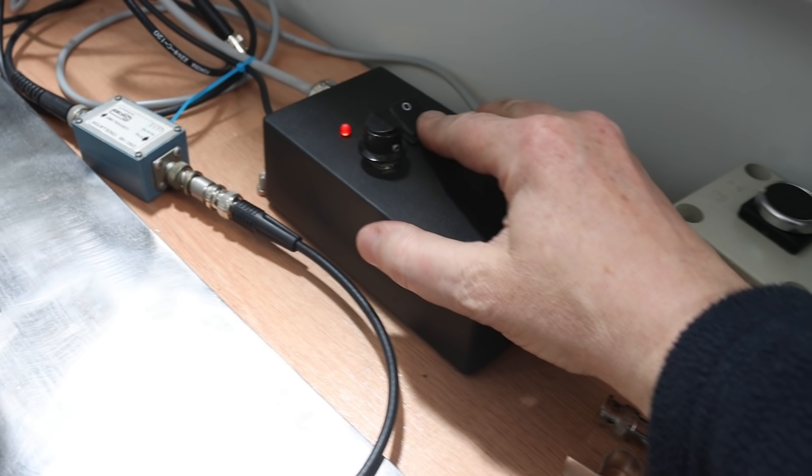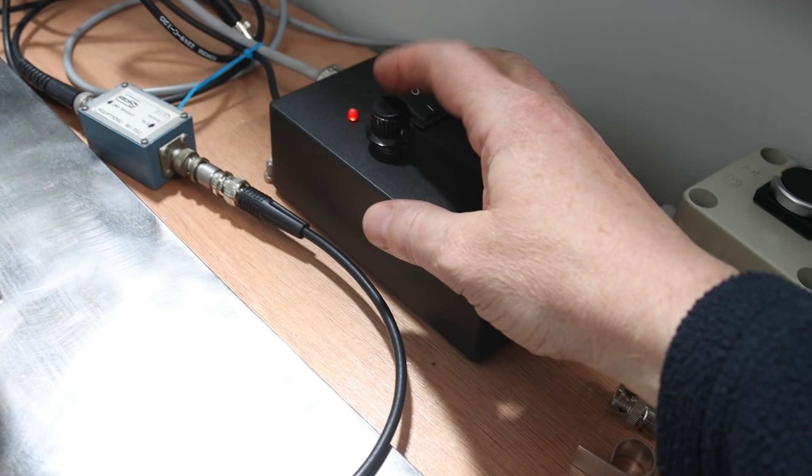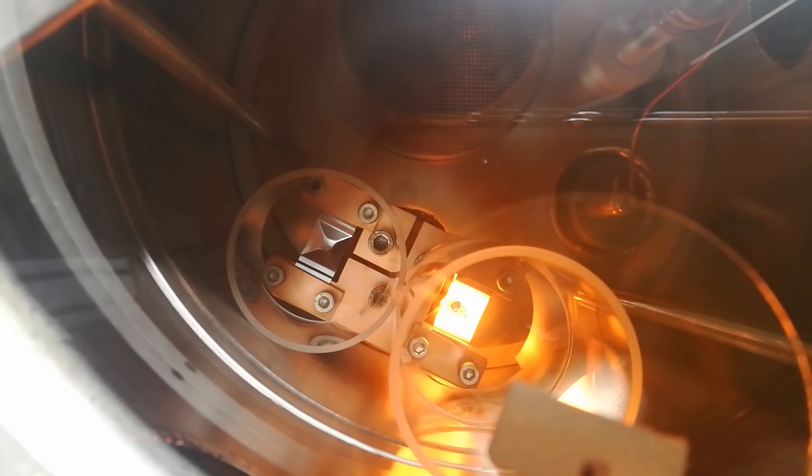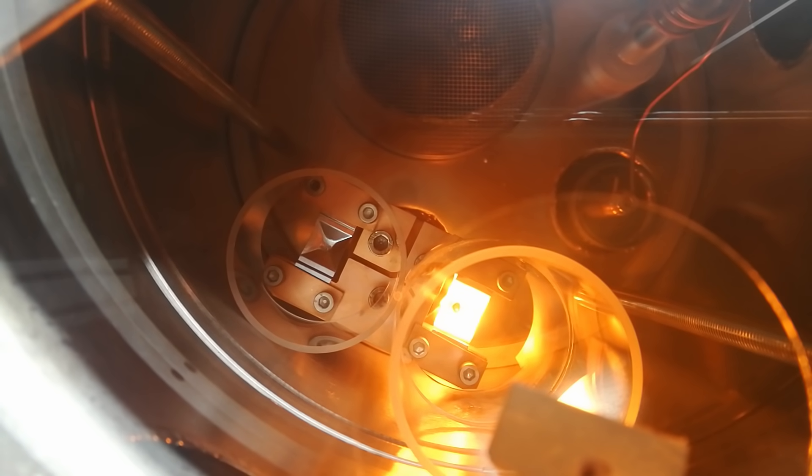After the pump down and the plasma clean, I can run a current through the tantalum evaporation boat that contains a few small grains of silver. Here you see a top view of the evaporation boat through a glass substrate.